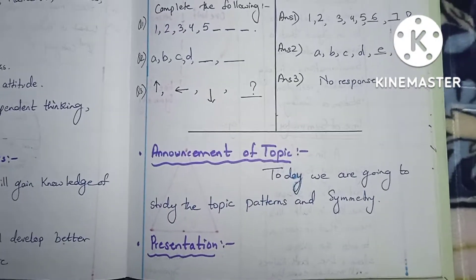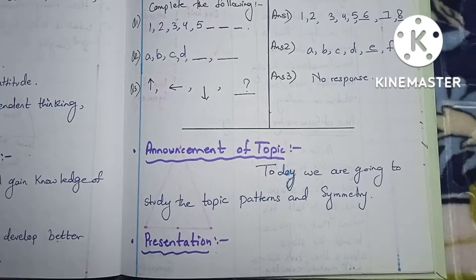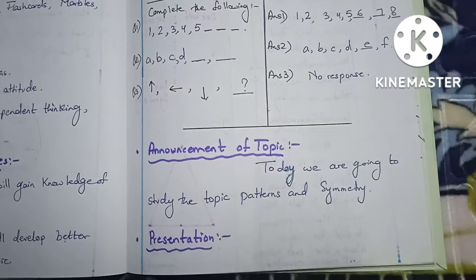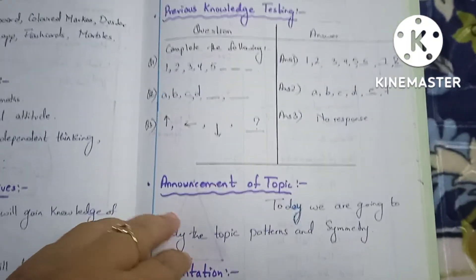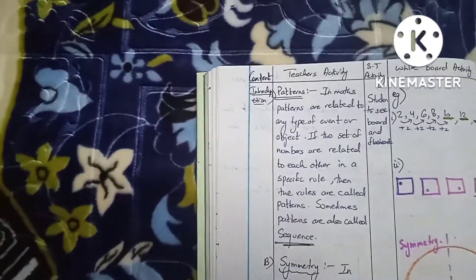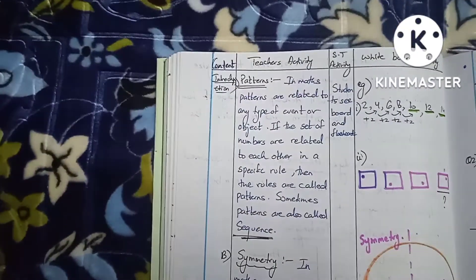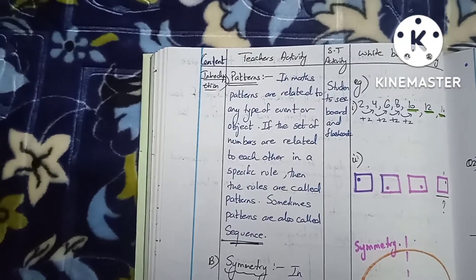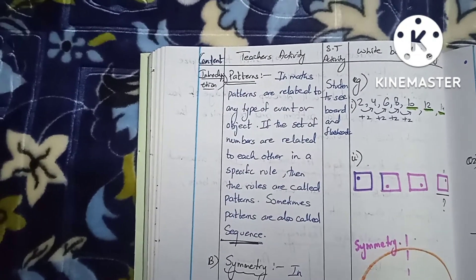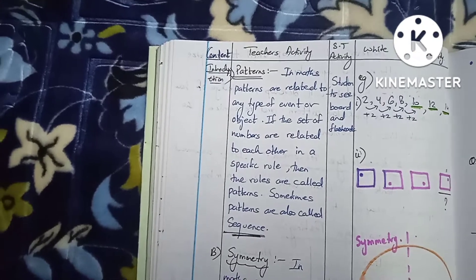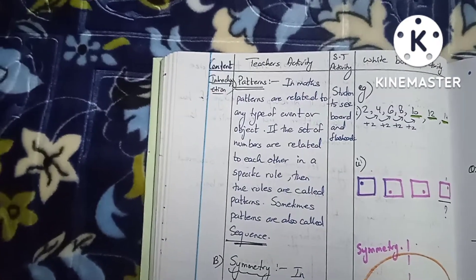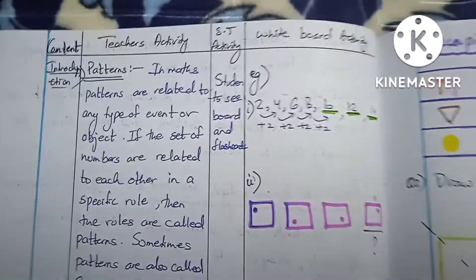Next I have given some other type of pattern from which I get no response, so now I announce the topic: today we are going to study patterns and symmetry. Patterns in maths are generally some type of relationship between numbers or objects — some specific relationship.